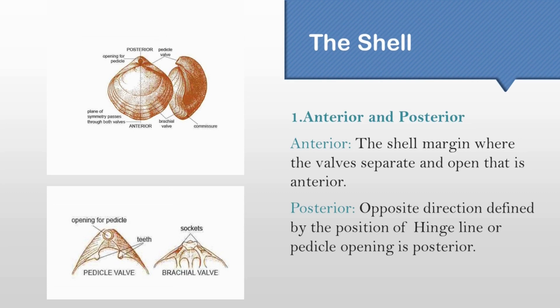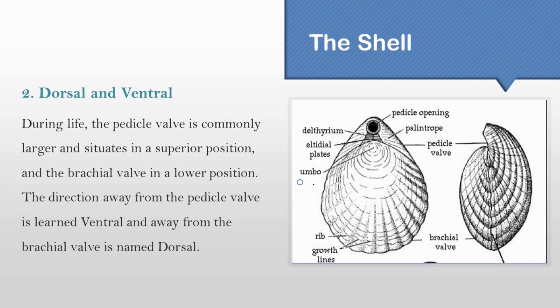Second, dorsal and ventral. The shell has two valves that open and close to feed, but these two valves are different sizes. There is a ventral valve or pedicle valve, which is the larger valve and it sits in the superior position. And then there is the dorsal or brachial valve, which is much smaller than the ventral valve.